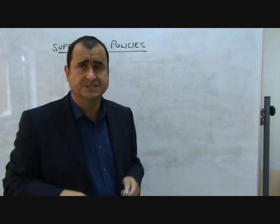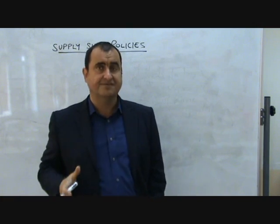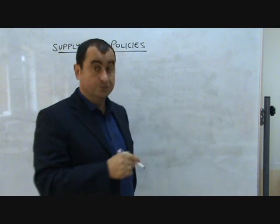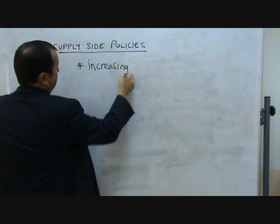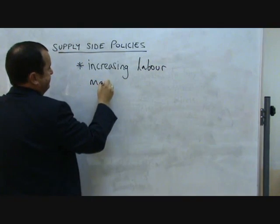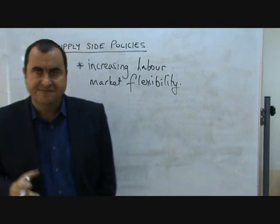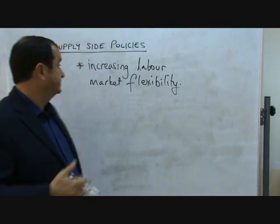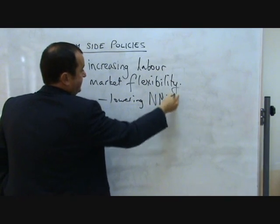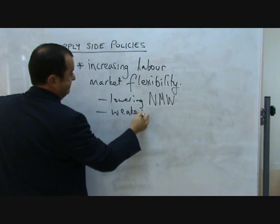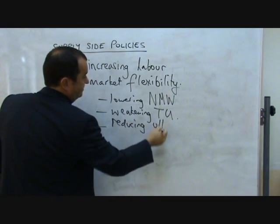Let's go through three or four policies that could be classified as supply-side policies. Each of these policies can be evaluated — they are not perfect, they have potential weaknesses and problems associated with them, as do all policies. So firstly, what about increasing labour market flexibility?